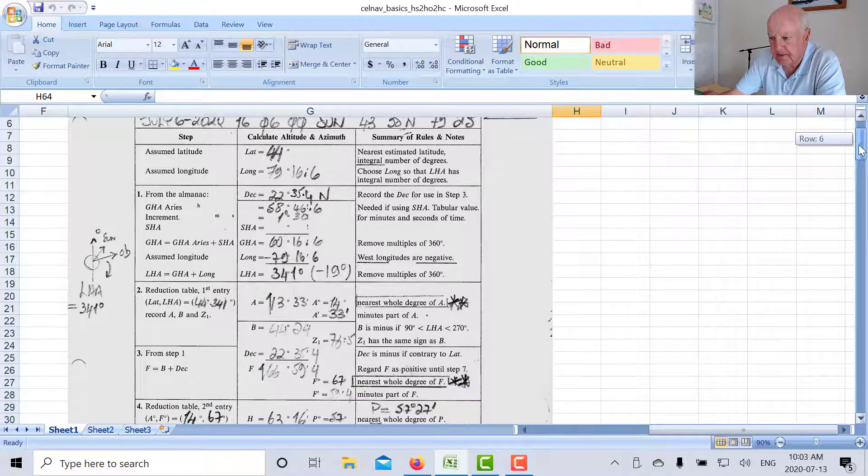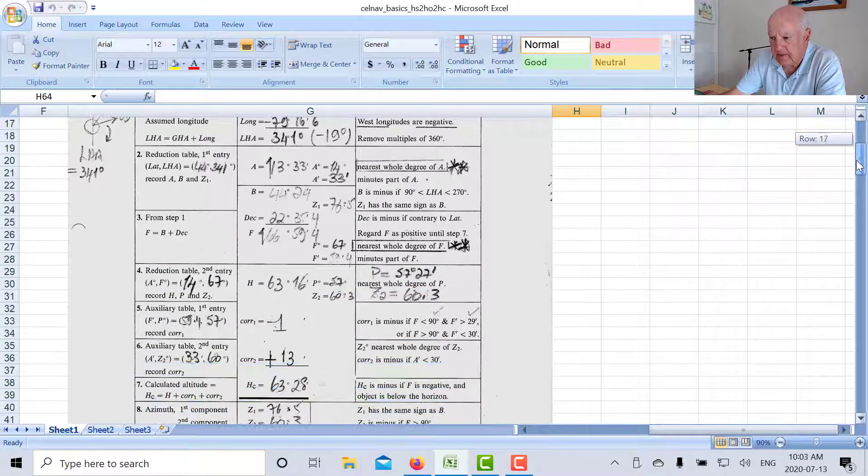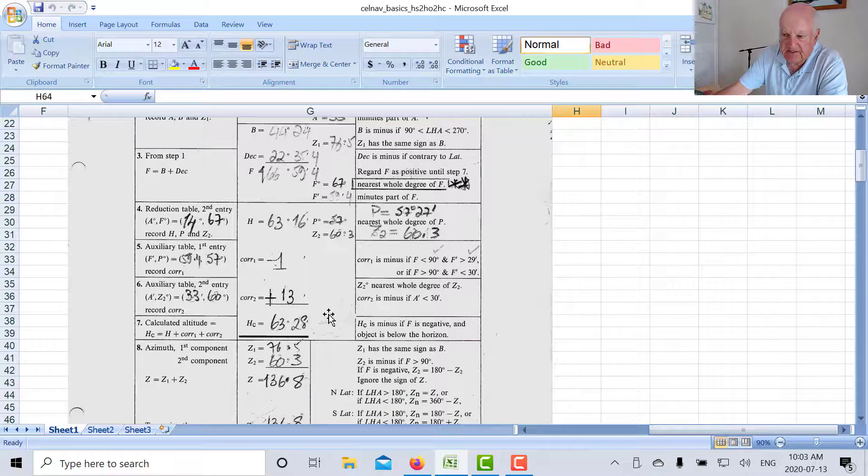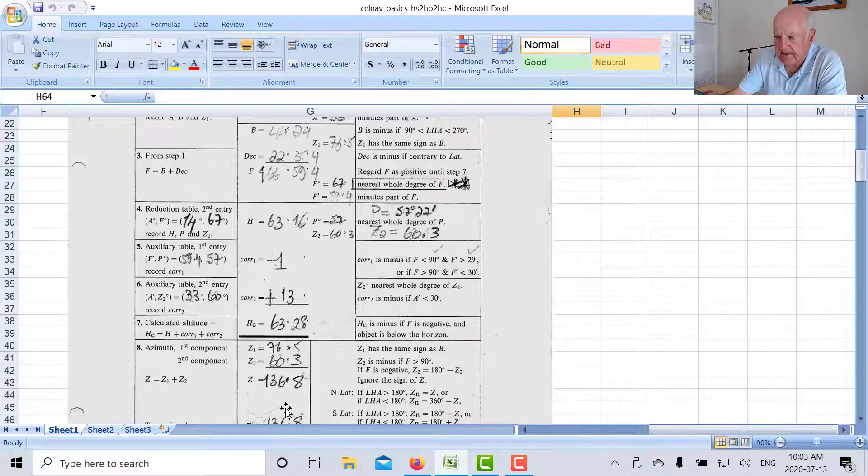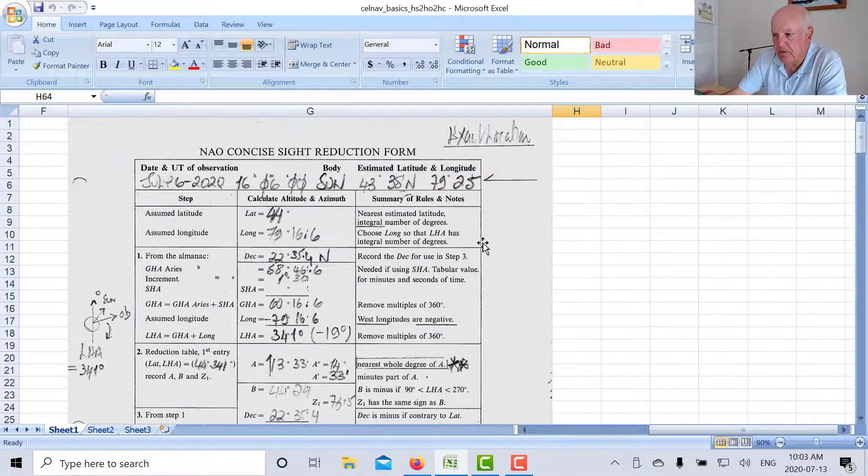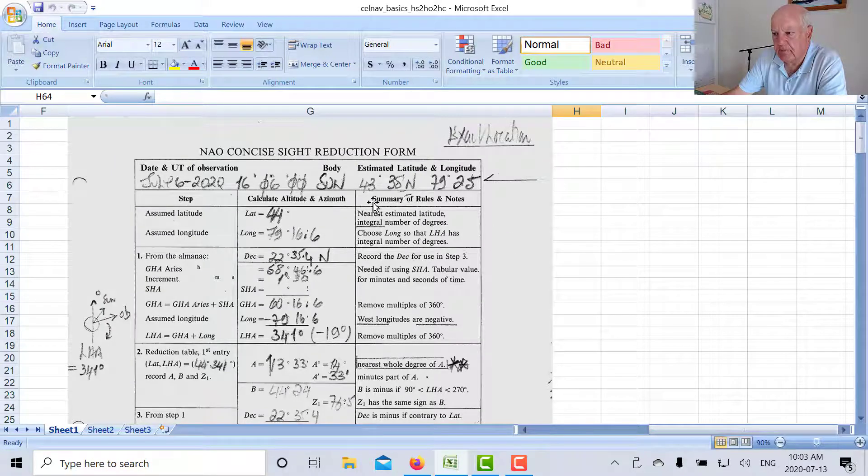So the assumed position then for the NAO is slightly different than your known position, and you get a value here of 63 degrees 28 minutes instead of 41 minutes and a slightly different angle, 136.8 degrees. Okay, so the NAO form gives you a good result for your assumed position which in this case is slightly different from your actual position.